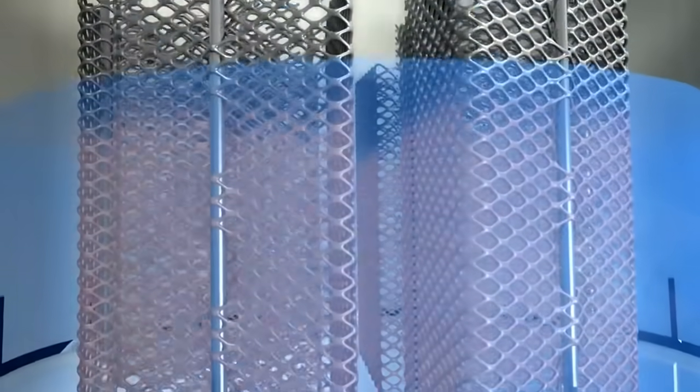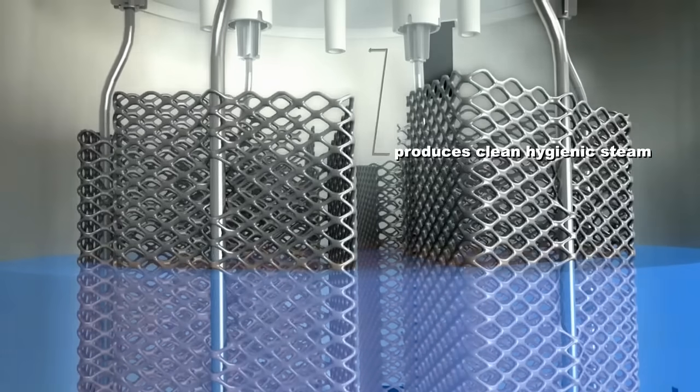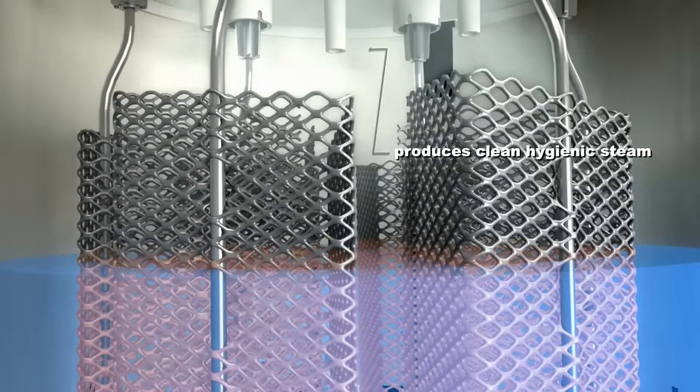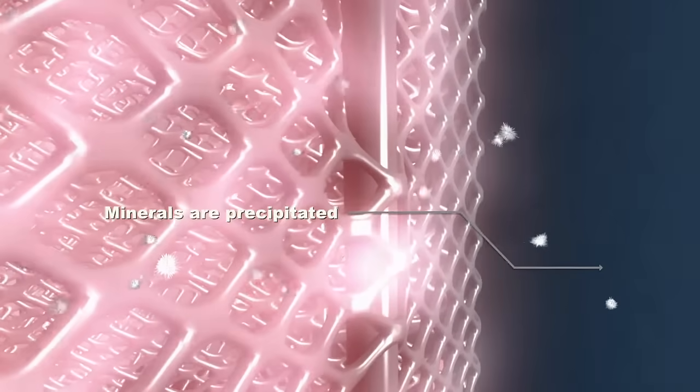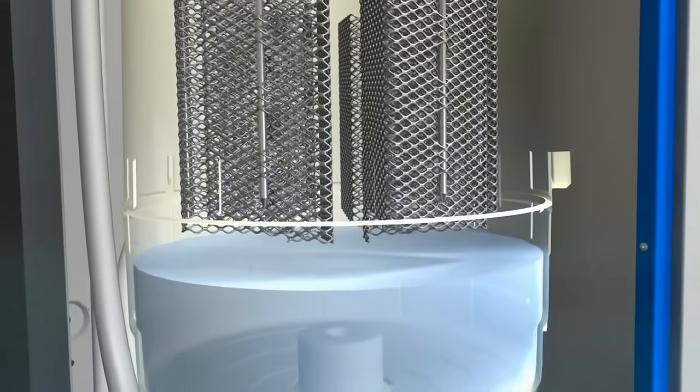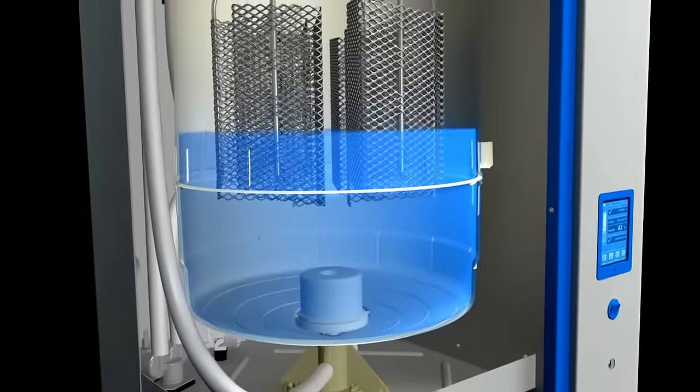The mineral content of the water steadily grows as water evaporates, increasing its conductivity. The mineral concentration must be reduced. This is achieved by rapidly replacing high mineral content water with fresh water to maintain consistent steam output.